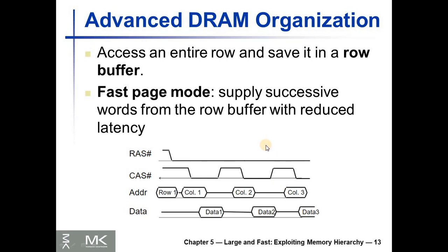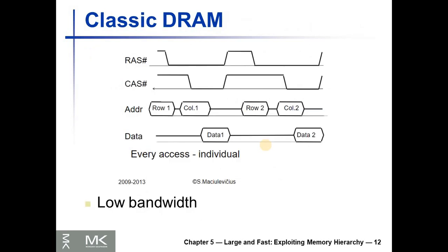Hello, this recording is about advanced DRAM organizations. The classic RAM has low bandwidth because you need to send the row address then the column address in order to get one data word.